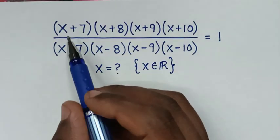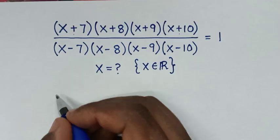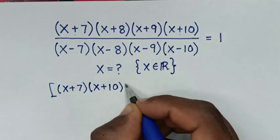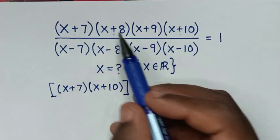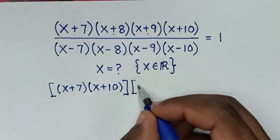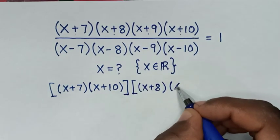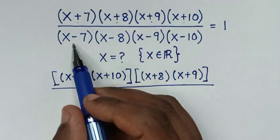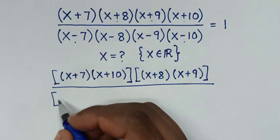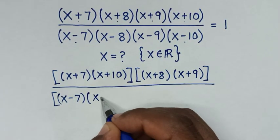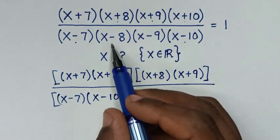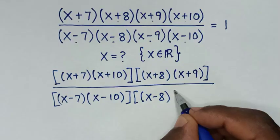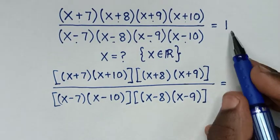In the first step, we start by multiplying (x+7) times (x+10), then times (x+8) times (x+9) in the numerator. In the denominator, we take (x-7) times (x-10), then times (x-8) times (x-9). This equals 1.